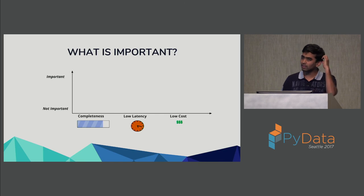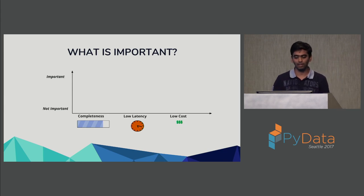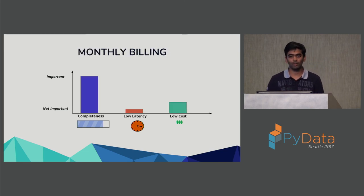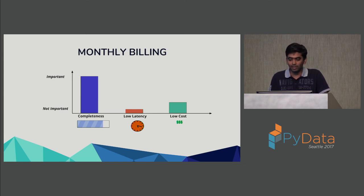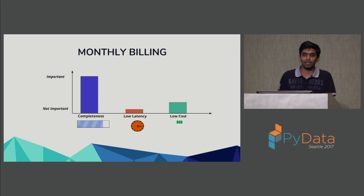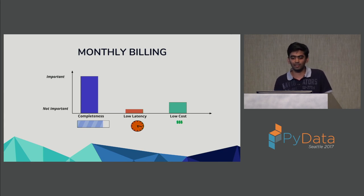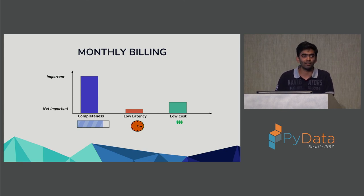To illustrate these trade-offs, consider a SaaS company running a monthly pipeline that counts API calls per account to bill users. Here completeness is very important — your business is based on a trust that you're counting API calls correctly. While latency is not that important since the pipeline runs once a month, and low cost is not critical because getting 100% correct results justifies the expense.